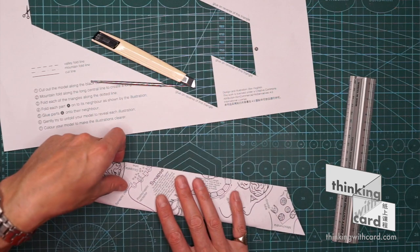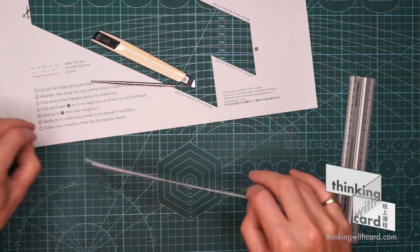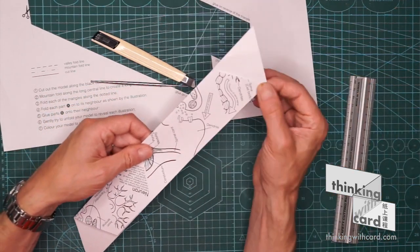For the first fold, you can just do it by eye and paper is very thin. So the first fold does that to create a strip.